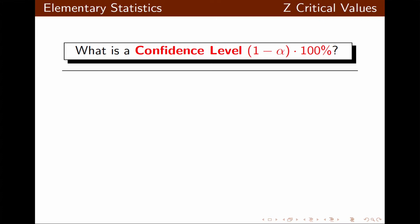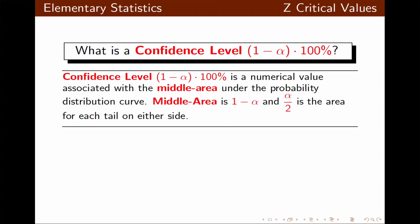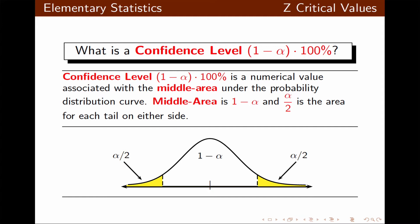The confidence level is 1 minus alpha times 100 percent. It is a numerical value associated with the middle area under the probability distribution curve, where the middle area is 1 minus alpha. The confidence level is usually expressed using percent notation. Alpha over 2 is the area for each tail on either side, so the area of both the right tail and the left tail is alpha over 2.